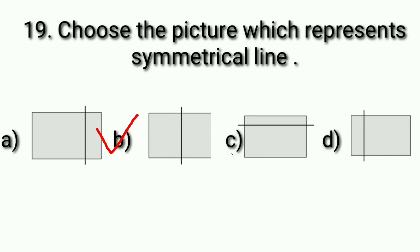In option C, the area of the lower part is more than the area of the upper part, so this is not a symmetric line. In option D, the area on the right side is more than the area on the left side, so this line is also not a symmetric line.